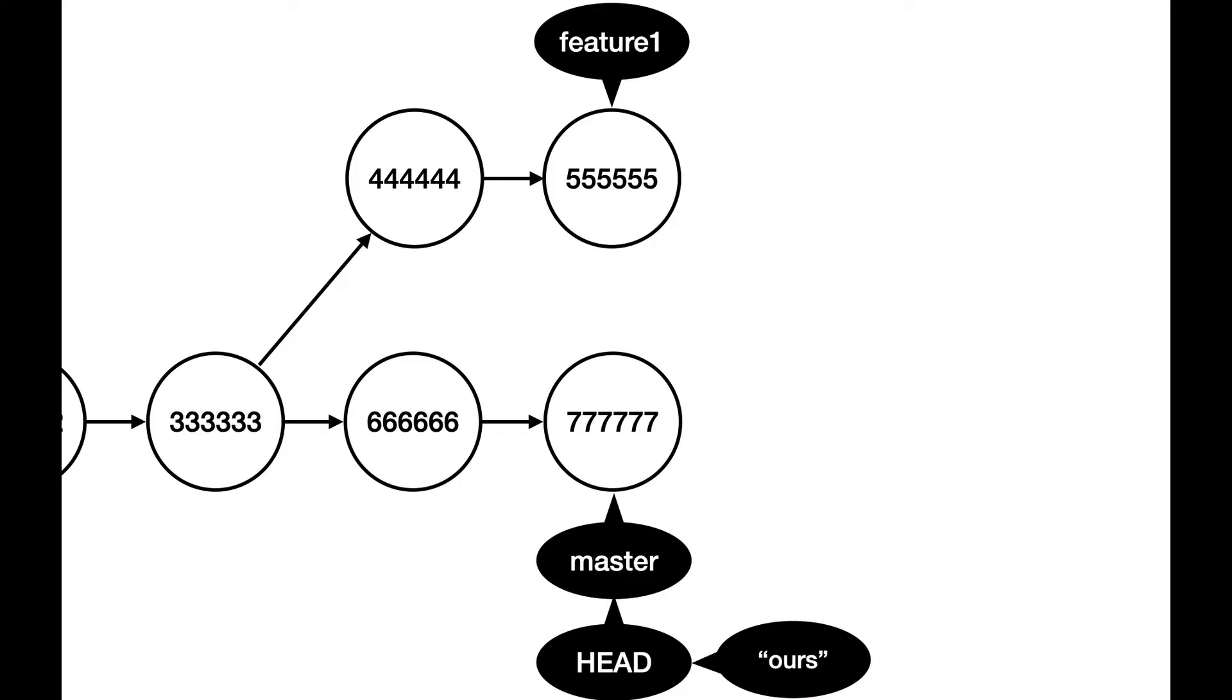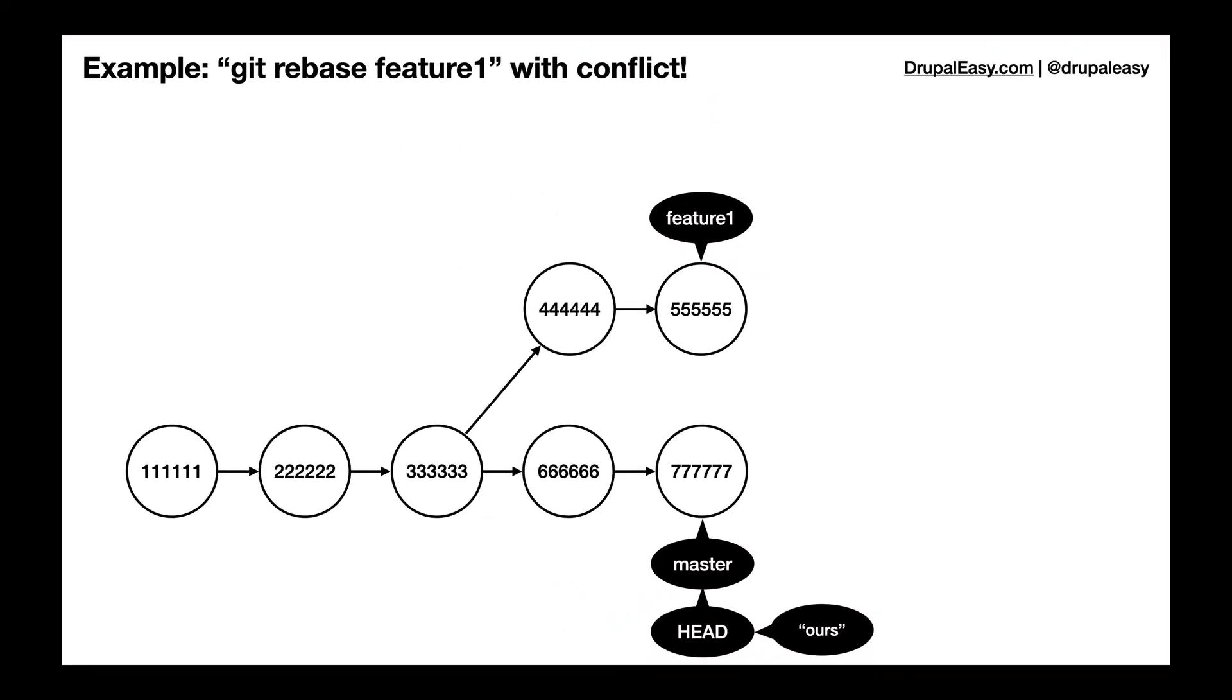When that's the case, you're always going to end up with a conflict in at least the composer.lock file. So let's go through the process to rectify that issue when rebasing feature one into the master branch. The first step is to kick off the rebase. You can see the HEAD is pointing to the master branch.